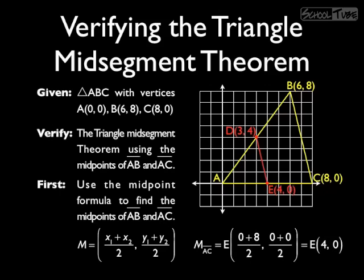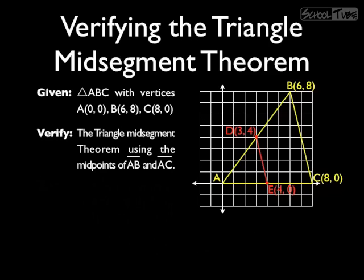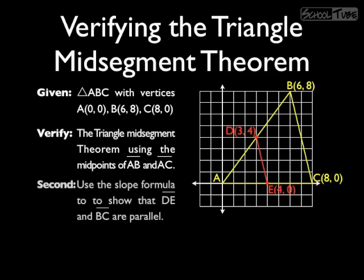Now we can quickly draw in the midsegment, and we can get started with everything else. Moving on to step 2. In step 2, we're going to use the slope formula to find the slopes of the midsegment and the third side, segment CB. And by showing that they have the same slope, we will verify that they are parallel.